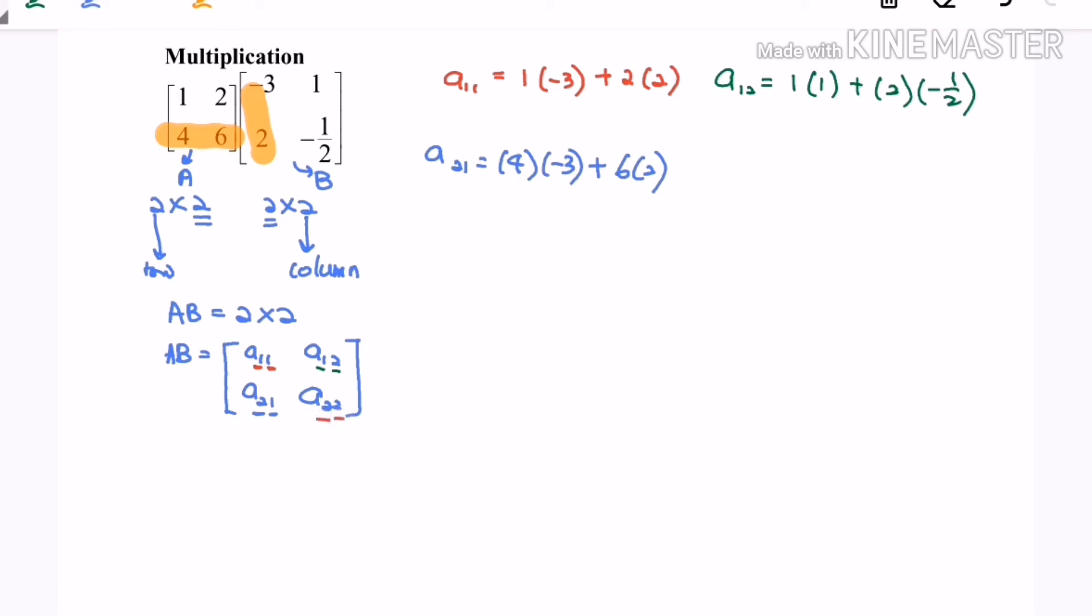Next A22. A22 means we are going to multiply the second row with the second column in order to get the result for A22. So 4 will be multiplied by 1 plus 6 will be multiplied by negative 1/2.